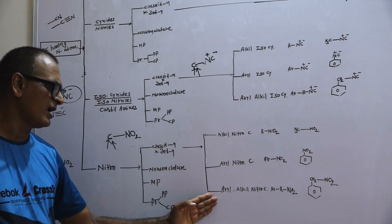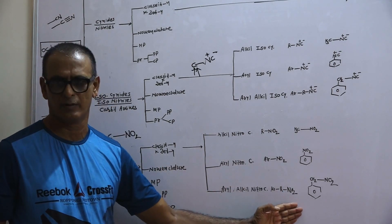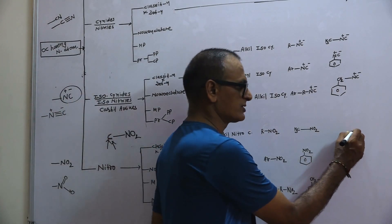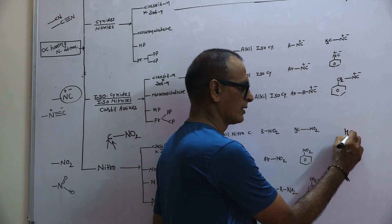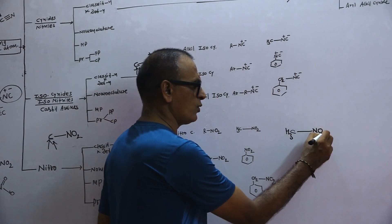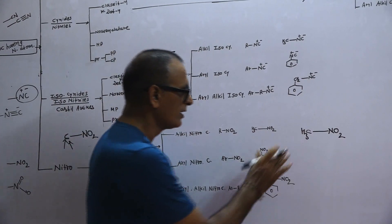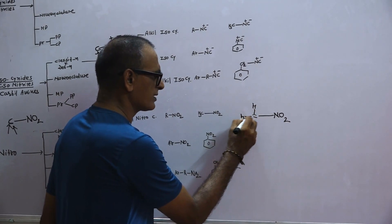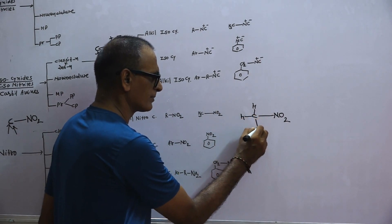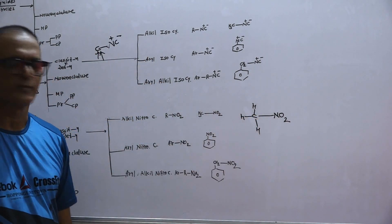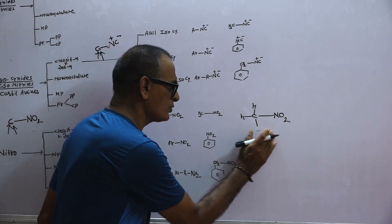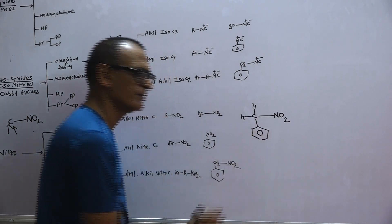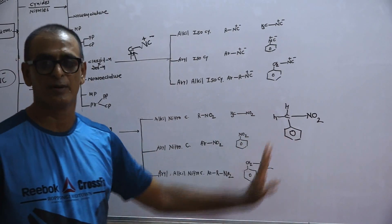The third type is aryl-alkyl nitro compound. These are derivatives of alkyl nitro compounds. For example, take nitromethane CH3NO2, which is an alkyl nitro compound with three hydrogen atoms attached to the carbon atom. If you replace one hydrogen by a phenyl group, the resulting compound is known as an aryl-alkyl nitro compound.